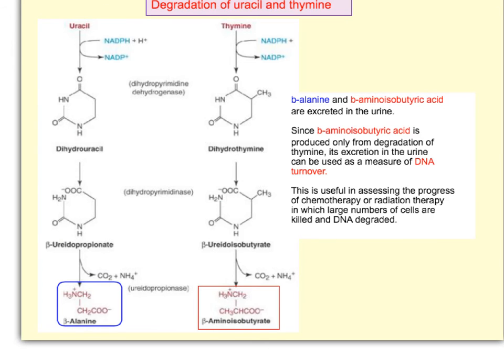Uracil gets further broken down into beta-alanine. Beta-alanine is an amino acid that we don't use in protein synthesis — it's not alanine, it's beta-alanine — and it simply gets excreted in the urine.